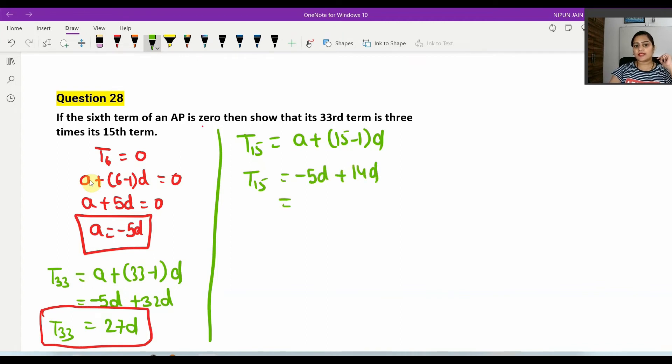Now, how much is the value of T15? 9D. So T15 is 9D and T33 is 27D. You have to show that T33 is 3 times T15.